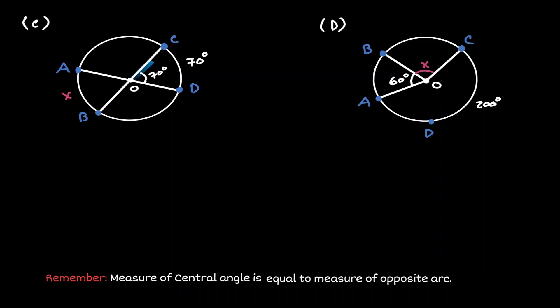The angle on the right is a vertical angle with the angle on the left — they both have the same measurement. Knowing that the value of the central angle is 70 degrees, the arc opposite to it will also be 70 degrees. Therefore, we can claim that arc AB is also 70 degrees.